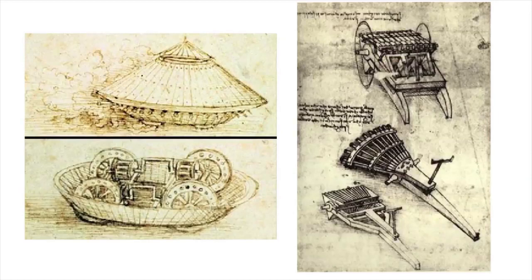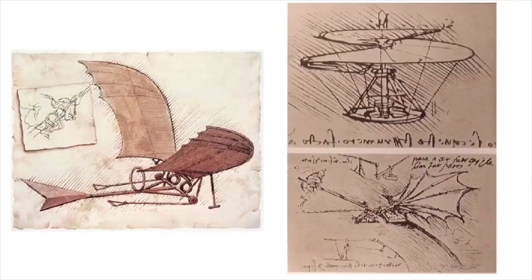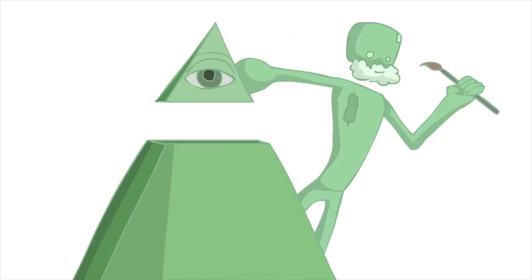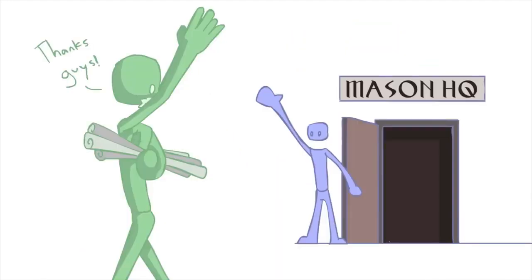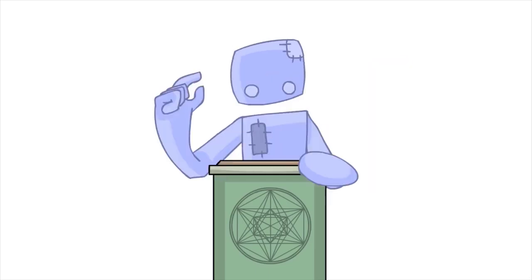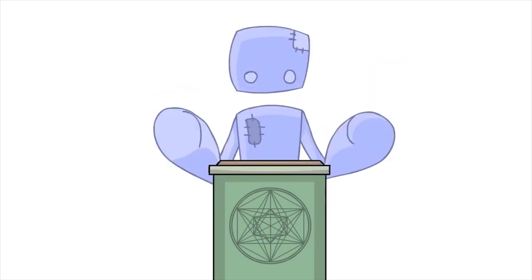Leonardo was able to invent such intricate inventions and designs because he studied divine proportion. Also, Leonardo was a master mason, and it's clear that he most likely got his original knowledge from them. Is the Flower of Life, among other things, the secret information that the masons have been keeping secret for the last thousand years?